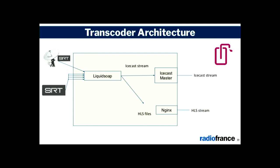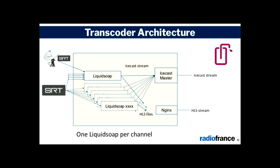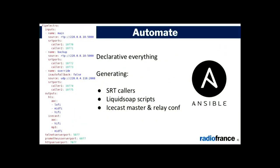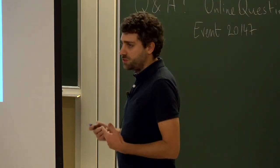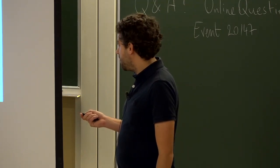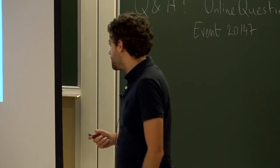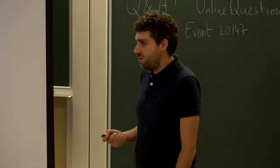On the transcoder, we have one LiquidSoap instance — actually one LiquidSoap per channel. So we needed a way to automate the installation. The answer is Ansible. We created a dictionary with all our radio channels — their inputs, outputs, SRT ports, and everything. With this dictionary, we generate all the configuration needed, so each channel has its own SRT caller, its own LiquidSoap script, and its own IceCast master and relay configuration.